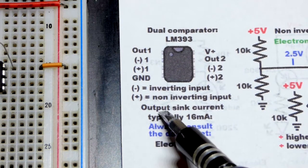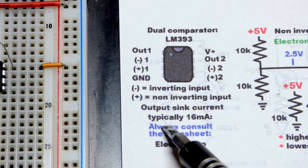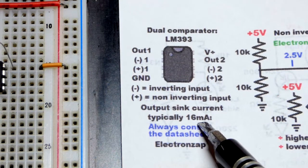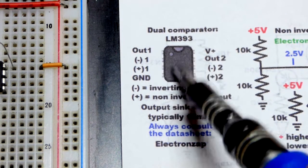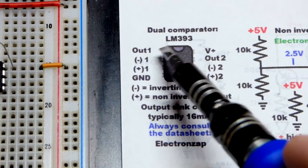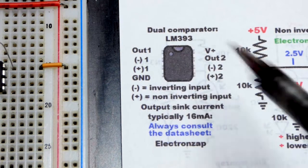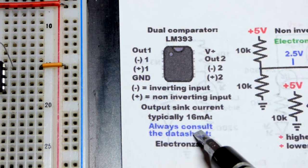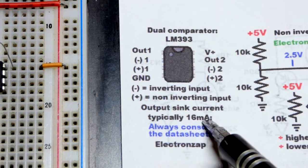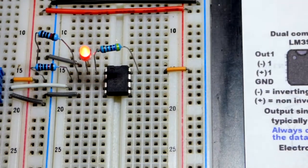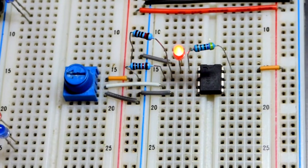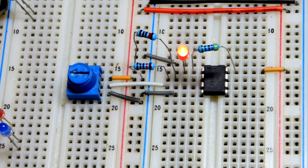But it said output sink current. And then for typically, it said 16 milliamps. So I'm guessing that's the most you can expect it to sink current. Remember, it doesn't source current. It just sinks. It connects to ground or turns off. But I always consult the data sheet. It had a minimum of 6 milliamps. So if it's only sinking 6 milliamps, that tells me that that's something you should expect when you are working with it.